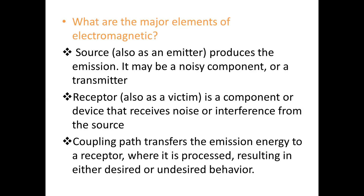The source, also called an emitter, emits or produces the emission — it may be a noisy component or a transmitter. The receptor, also called the victim, is a component or device that receives noise or interference from the source. The coupling path transfers the emission energy to the receptor, where it is processed resulting in either desired or undesired behavior.